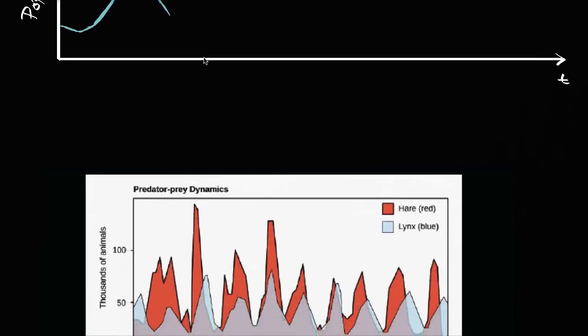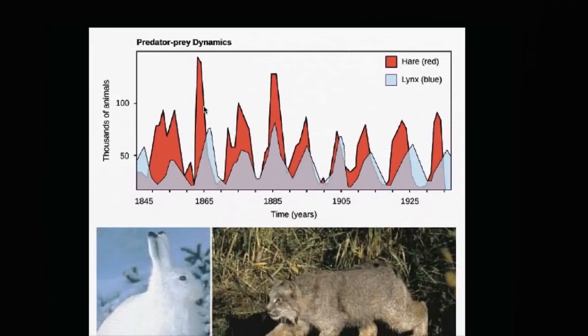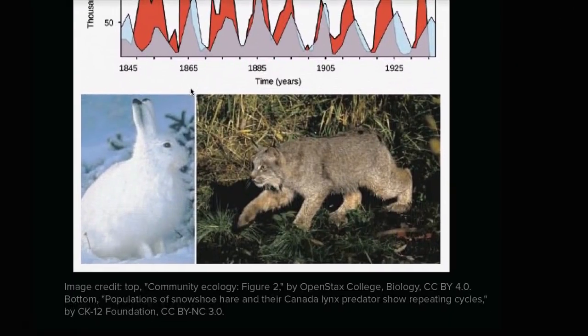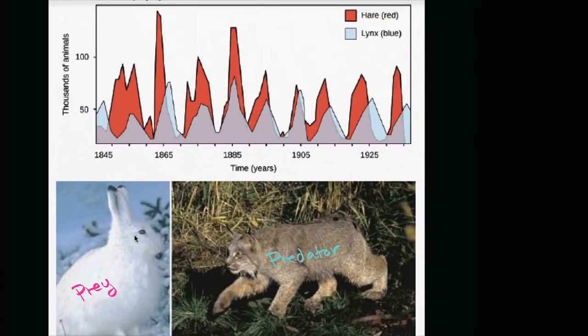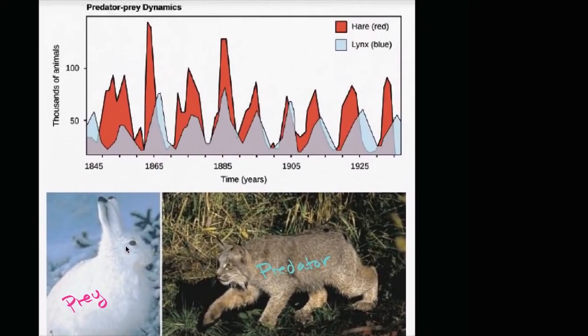One of the often cited examples is interactions between the snowshoe hare, which would be the prey in this situation, and the Canadian lynx, which would be the predator in this situation. And you see a very similar cycle to what I just drew, kind of just reasoning through it.